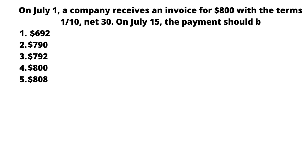On July 15, the payment should be — we have five options: number one is $692, number two is $790, number three is $792, number four is $800, and number five is $808.